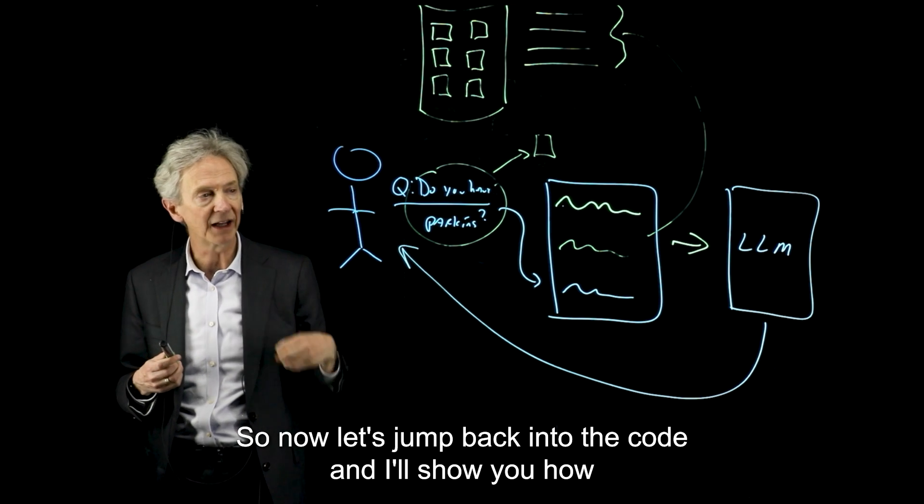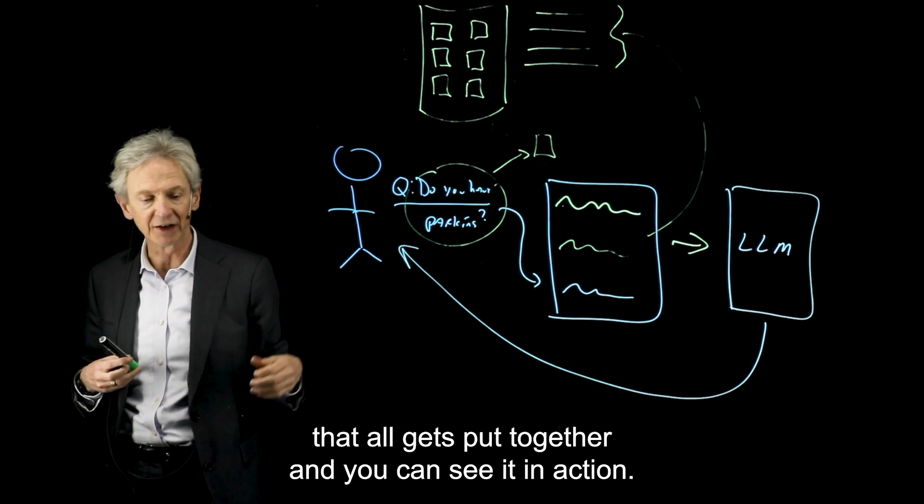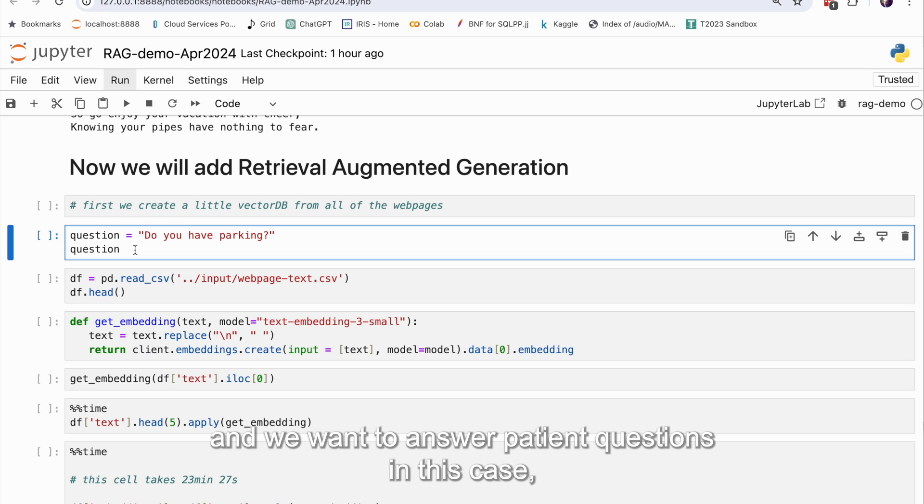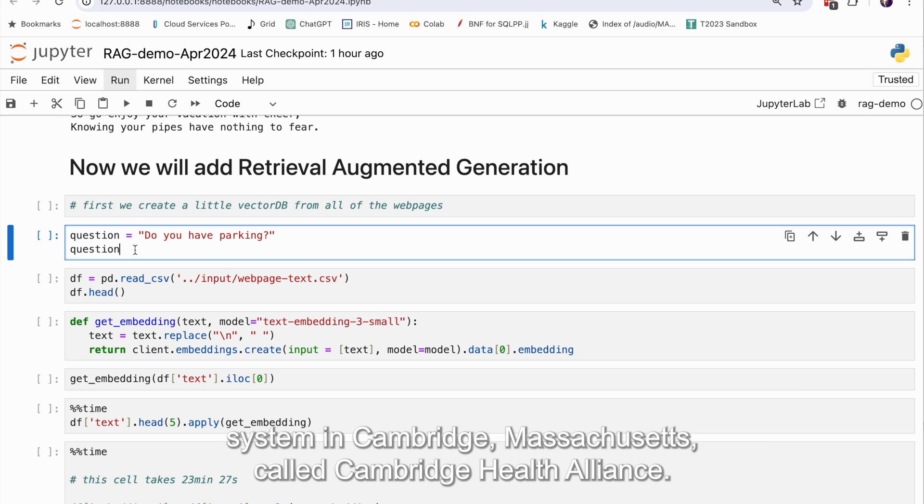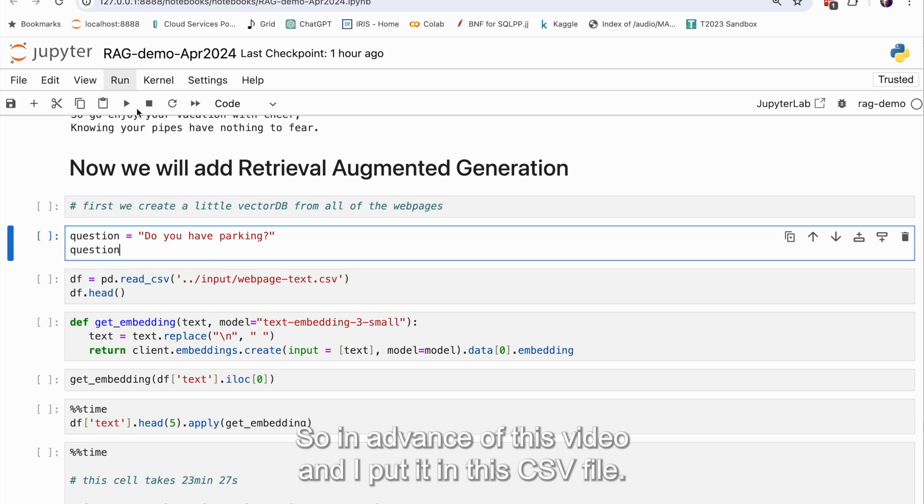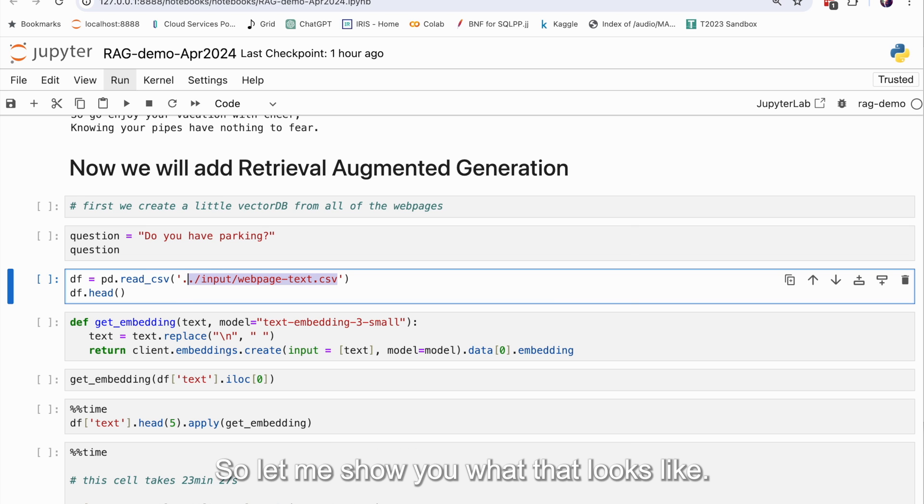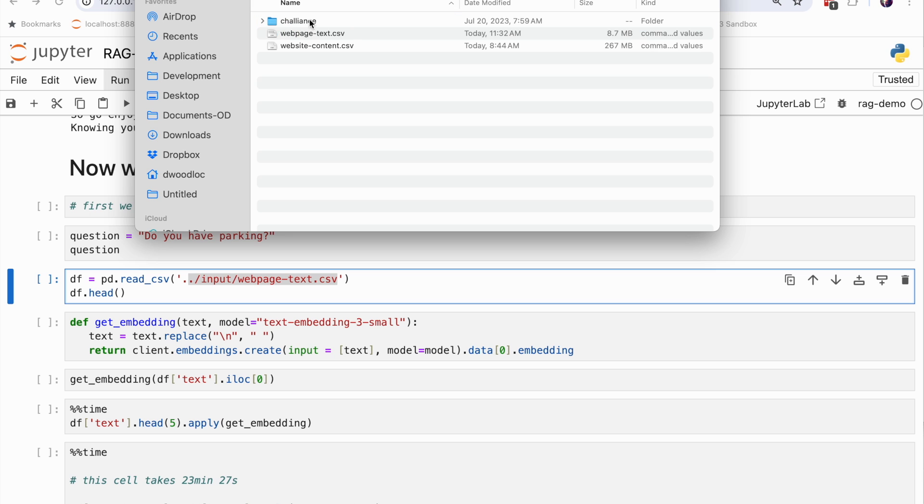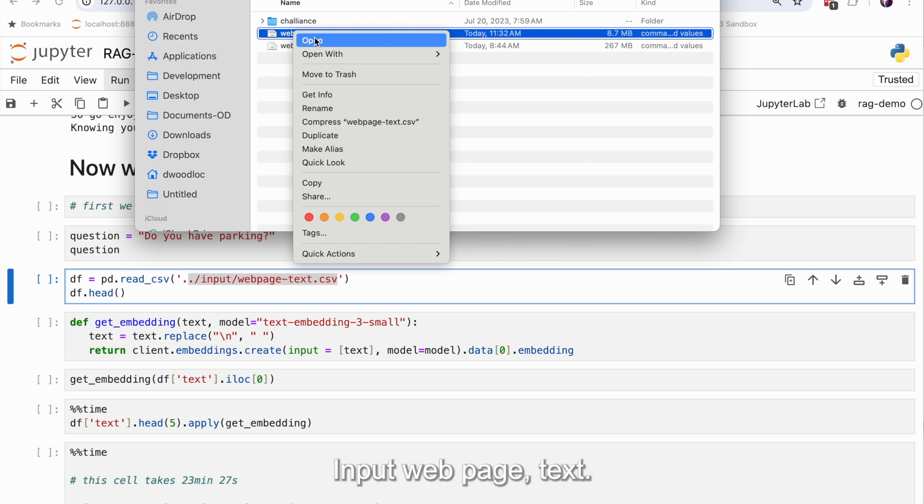So now let's jump back into the code, and I'll show you how that all gets put together, and you can see it in action. So here what we want to do is we're going to pretend we're a health system, and we want to answer patient questions. In this case, I took the entire website of this local health system in Cambridge, Massachusetts. It's called Cambridge Health Alliance, and I downloaded it, so in advance of this video, and I put it in this CSV file. So let me show you what that looks like.